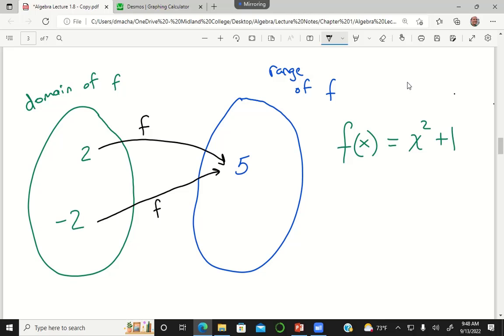So if I asked you what's the inverse function do, does it map the 5 to the 2 or to the negative 2? You know there's not a clear answer. So that's why we say only a one-to-one function can truly have an inverse.